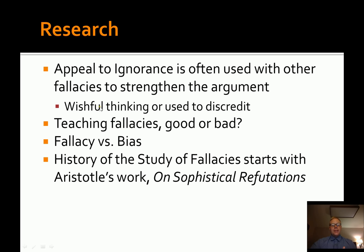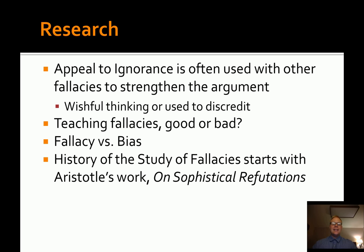Which leads me to the relationship between fallacies and biases. The terms are often used interchangeably, but they're two different things. Fallacies are errors that people make in the decision-making process on arguments or decisions based on logical reasoning that makes sense to them or is easy to connect the steps on. Whereas a bias is a subconscious belief or motive a person holds on an argument.